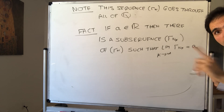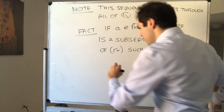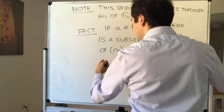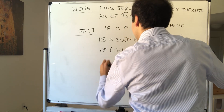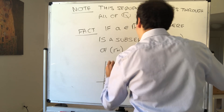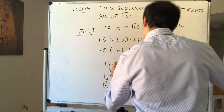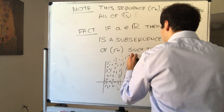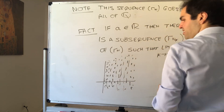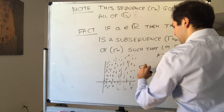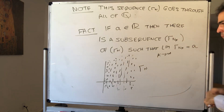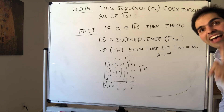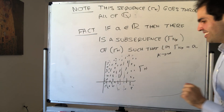Let me tell you why this is so amazing. The sequence r_n is pretty wild — it's completely chaotic. It goes through all the rational numbers and doesn't converge at all. It's one of the craziest sequences you'll see.